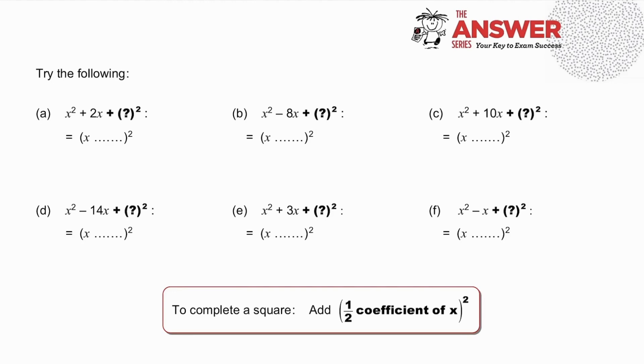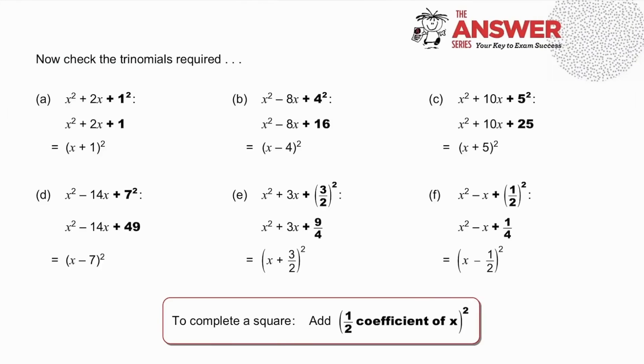To complete a square, are we adding half the coefficient of x squared? Now pause to check the trinomials required, what we add, and the square obtained.